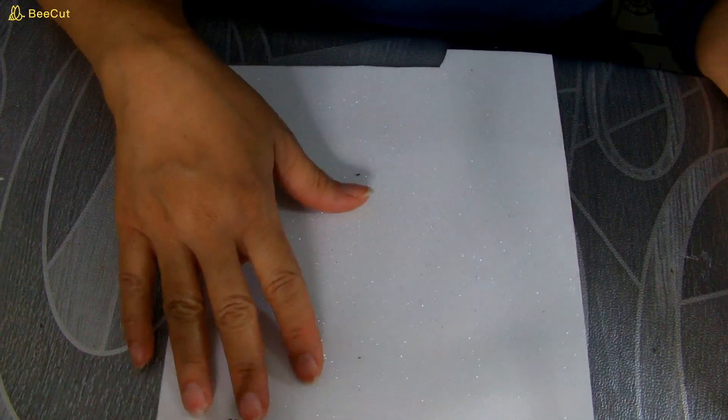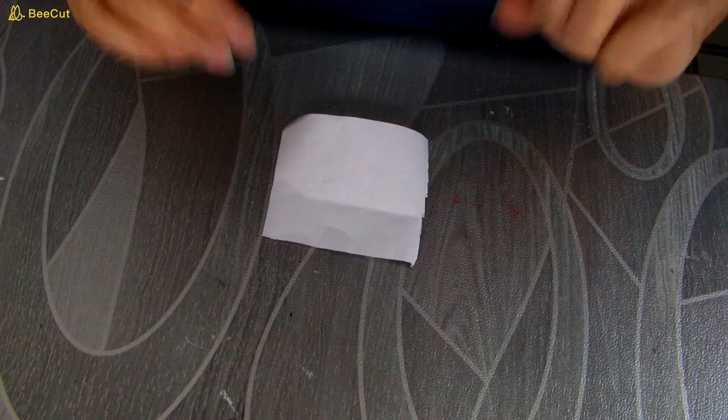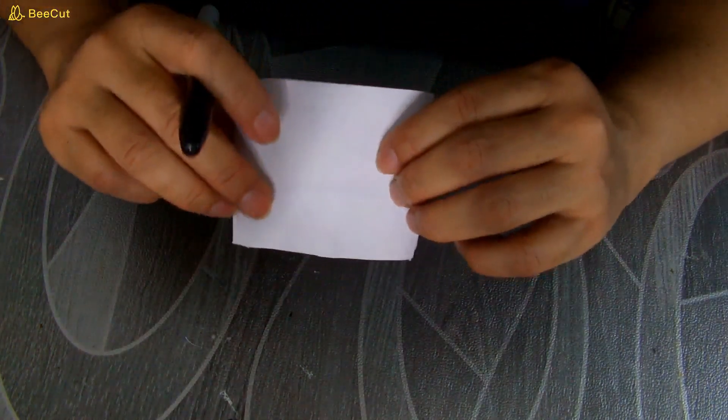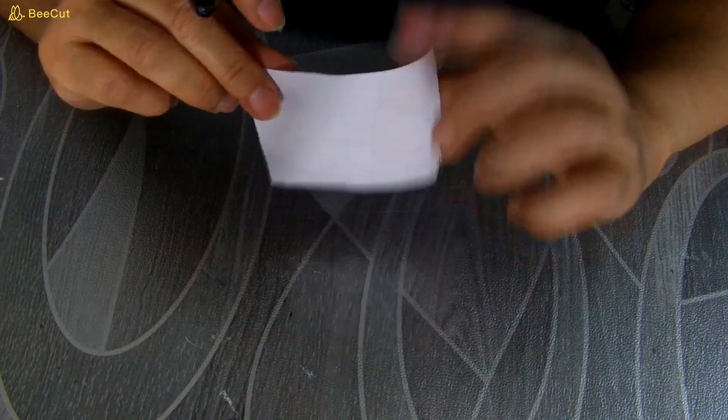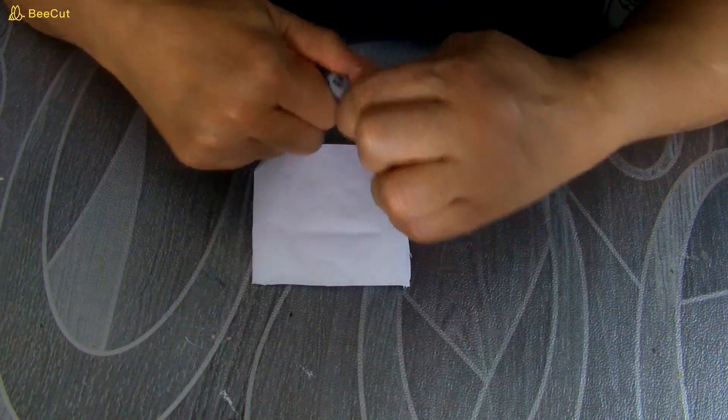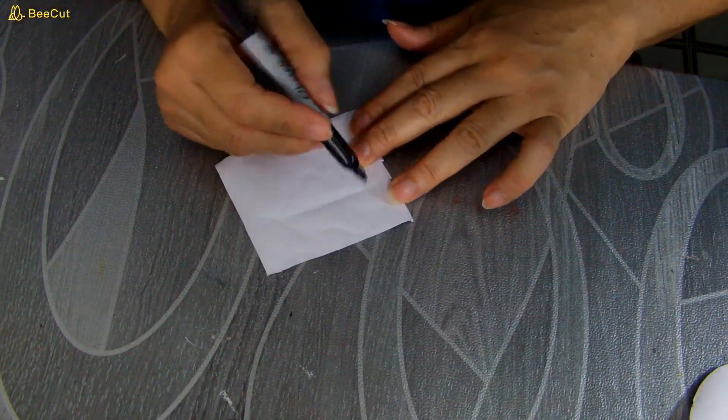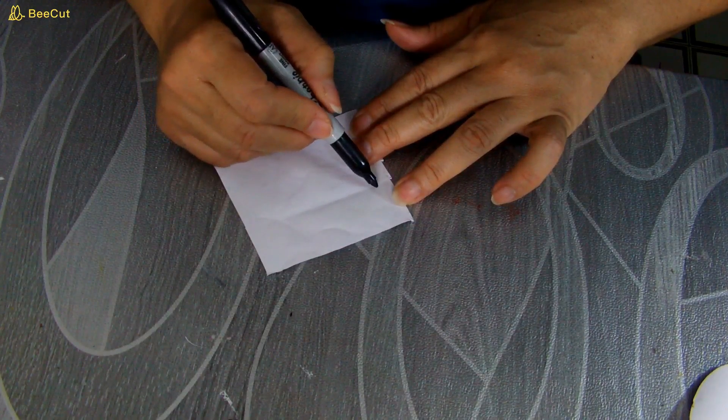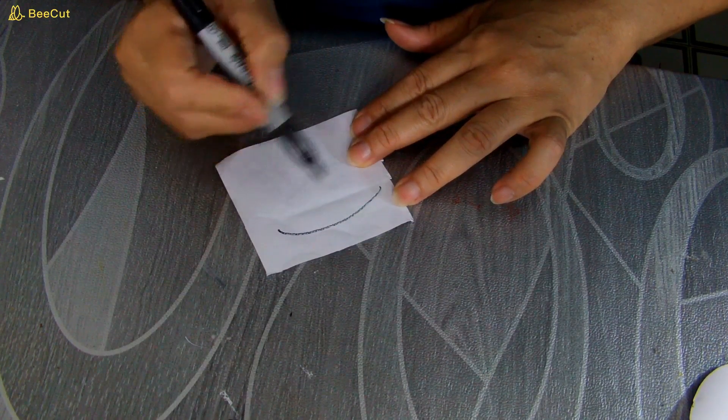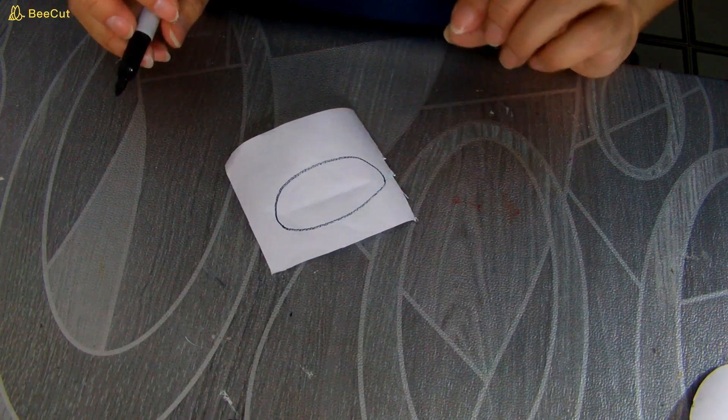Y vamos a hacer nuestro lazo. El lazo lo voy a estar haciendo blanco. Esto es un foami escarchado. Y para hacer nuestro lazo vamos a necesitar un pequeño molde y es muy fácil de hacer. Simplemente voy a hacer como un óvalo así, como un huevo o algo así más o menos.